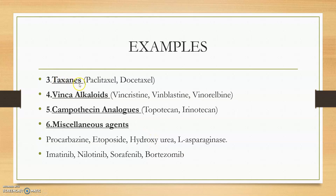The third category is taxanes — paclitaxel and docetaxel. These are the two important taxanes used. Next are the Vinca alkaloids, which will be very easy to remember: vinblastine, vincristine, vinorelbine, etc.